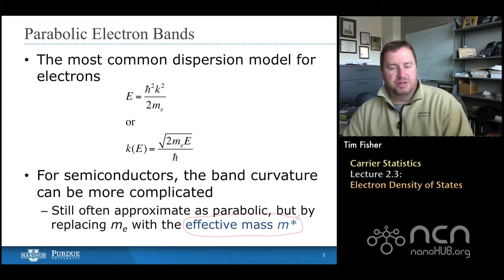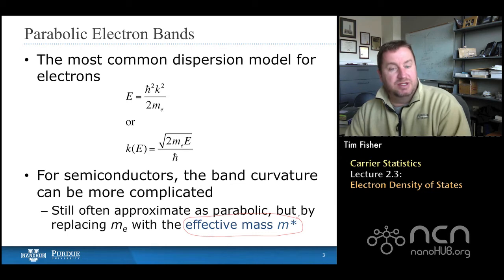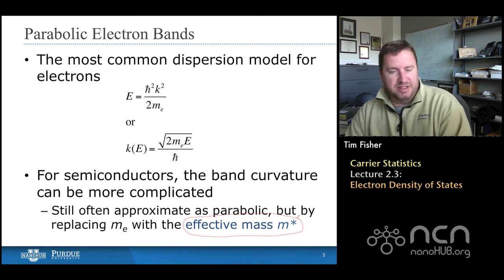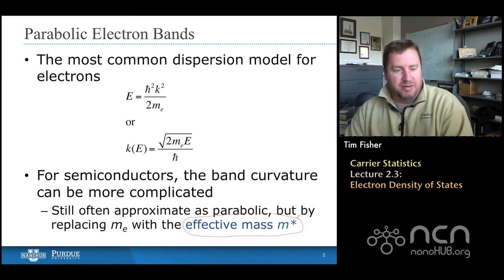And in semiconductors also, even if the parabolic assumption is reasonable, we still often have to make another change, essentially, because the band structure is not shaped the same way that it is for free electrons. It is parabolic, but the curvature is different. And so what we do in those cases is replace the M sub E, which is the electron mass. That's the electron rest mass, which you can look up. We replace that with an effective mass. That's really a band curvature parameter.